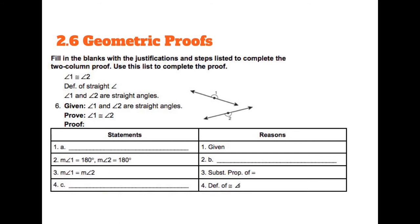Now let's get into some proofs. Here you are given three answers to use in your proof. The first thing we always start a proof with is what we're given. So what is the given information here? It's that angle 1 and angle 2 are straight angles — that's given to us. What we're trying to prove is always going to be your last statement, so if I'm trying to prove angle 1 is congruent to angle 2, then I know that's going to be my last statement.